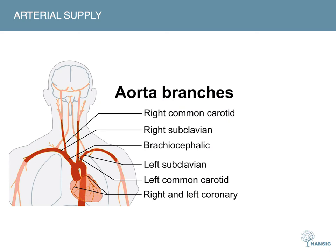We'll start with the heart. First we have blood coming out of the heart in the ascending aorta and then the descending aorta. One of the first branches of the aorta is the brachiocephalic artery, which splits into the right subclavian and the right common carotid. The left common carotid is actually a branch directly from the aorta — the second branch of the aorta.